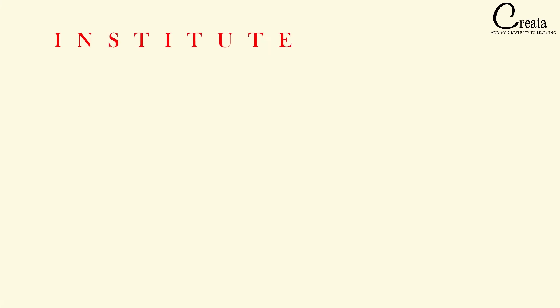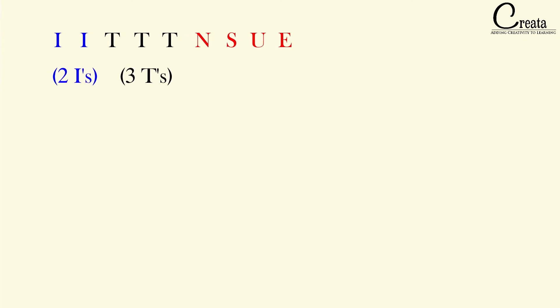Let's take one more example. The example is the word INSTITUTE, which is a 9-letter word, and we have to form the different 9-letter arrangements from the letters of INSTITUTE. If you observe, INSTITUTE has 2 I's and 3 T's. In the previous cases we saw only a single letter repeating. Here we have a different case — I is repeating 2 times and T is repeating 3 times.